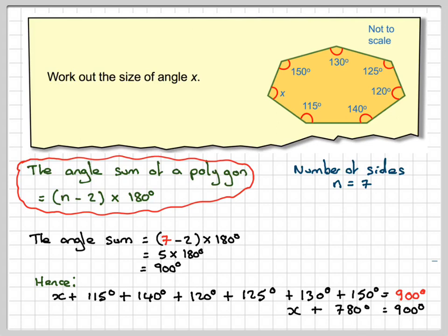In order to find x, we need to take away 780 from both sides, so we're going to get x is 120 degrees. So this angle here was 120 degrees.